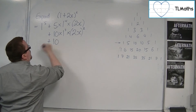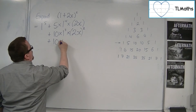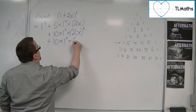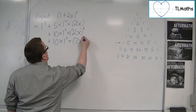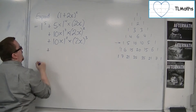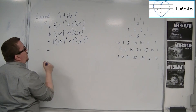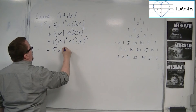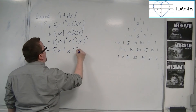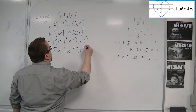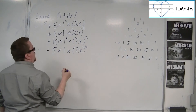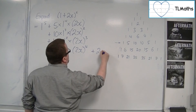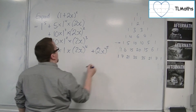Then the next line we'd have 10, 1 reduces in power, the 2x increases in power. Then we've got 5 times 1 times 2x to the 4, and then finally we're going to have 2x to the 5.